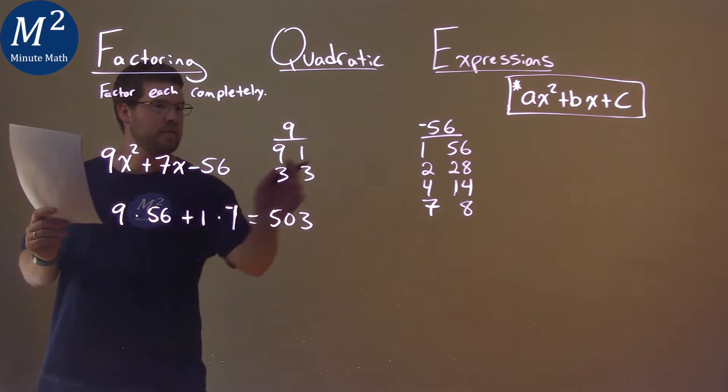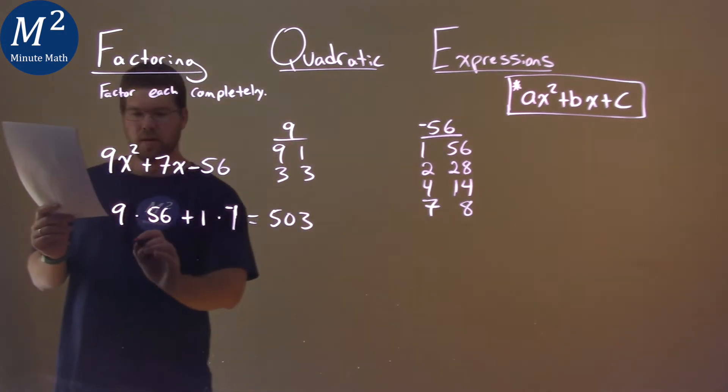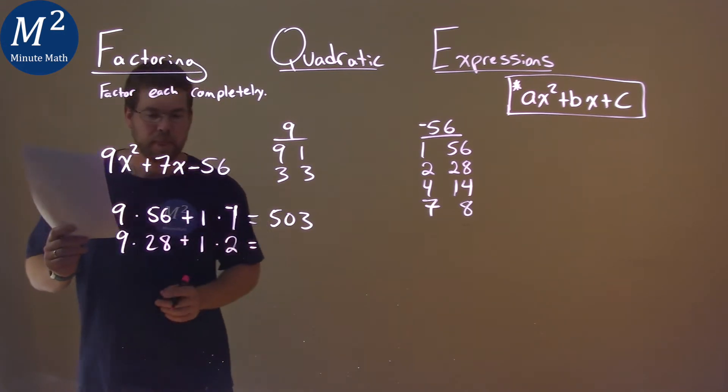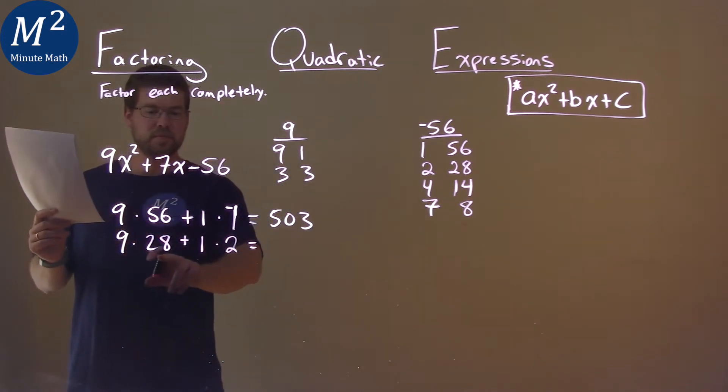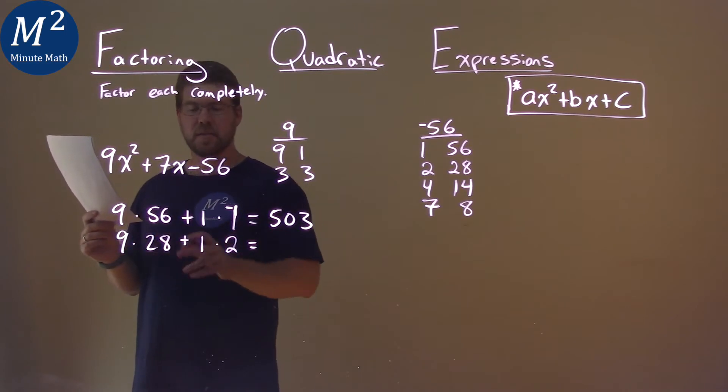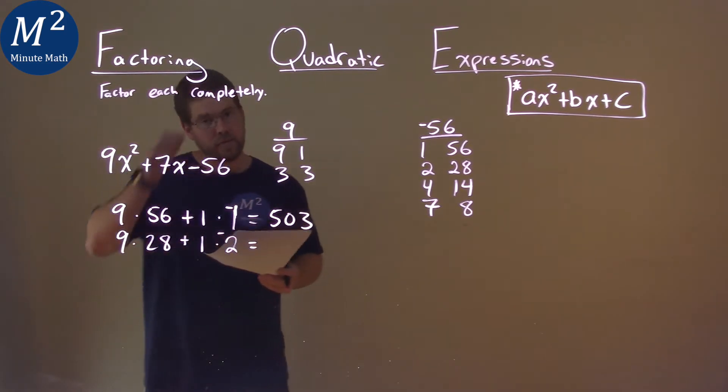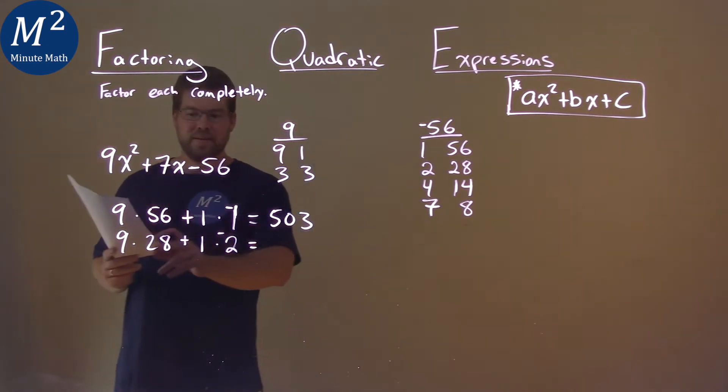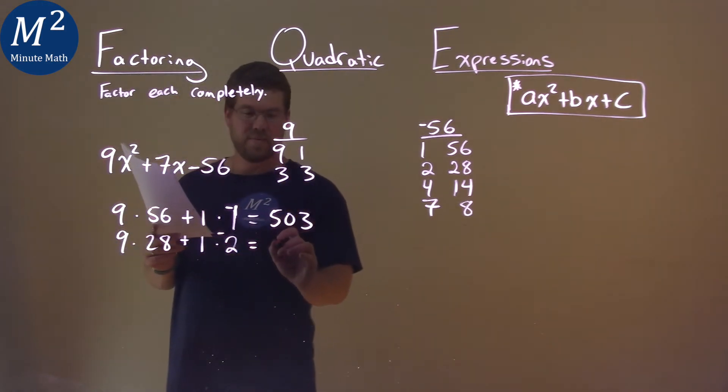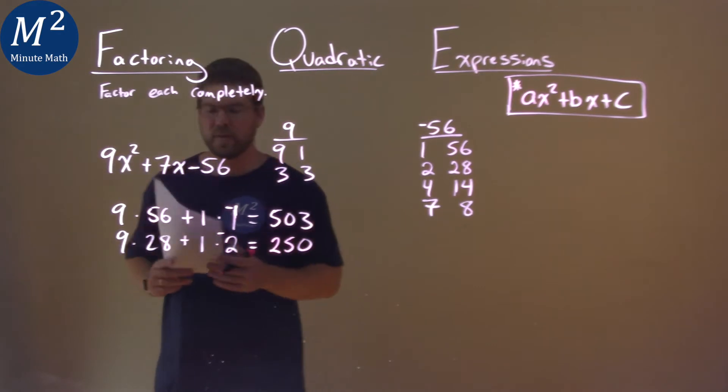So we're going to try it again. 9 and 1 and 2 and 28. So 9 times 28 plus 1 times 2. Out of the two there, 1 times 2 is clearly smaller than 9 times 28. Put a negative right there. 9 times 28 plus 1 times negative 2 is a positive 250.